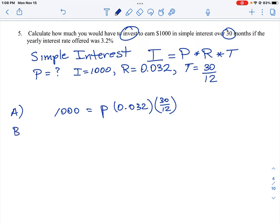The next thing you want to do is you want to simplify values here, and we want to get a number in front of the variable P. So there's nothing we can do with the 1,000, but we can take our calculator and we can go 30 divided by 12, which is 2.5.